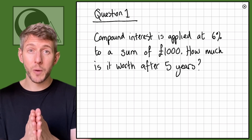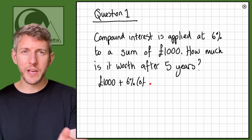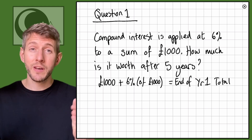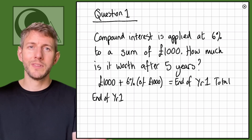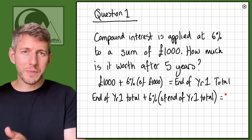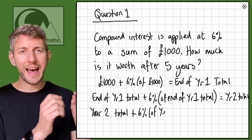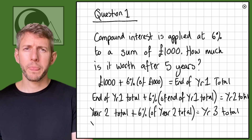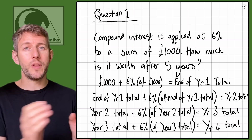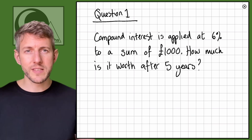So with compound interest, I'm going to be adding 6% onto my £1,000 for year one, and then I'll have a new amount of money because at the end of year one I've got 6% more. When I add my 6% on for the next year, I'm adding it onto the amount I had at the end of year one, then onto year two, year three, year four, and so on.